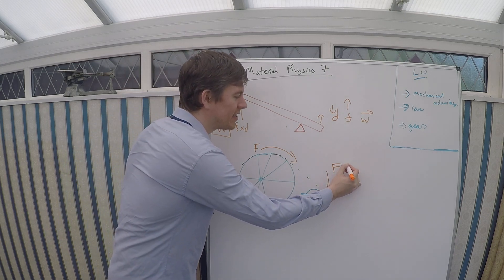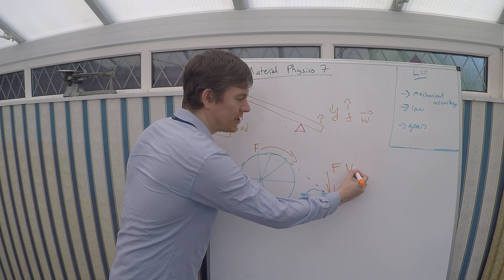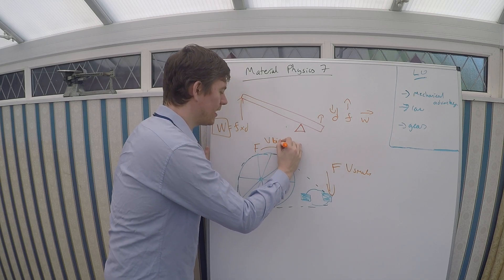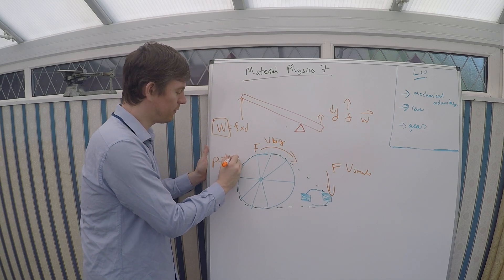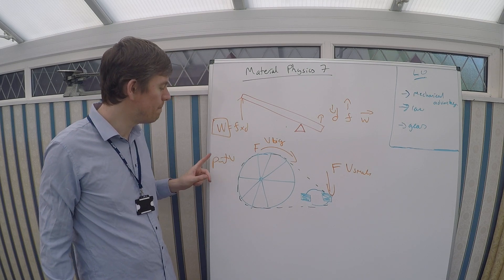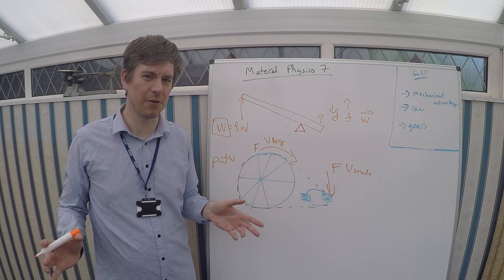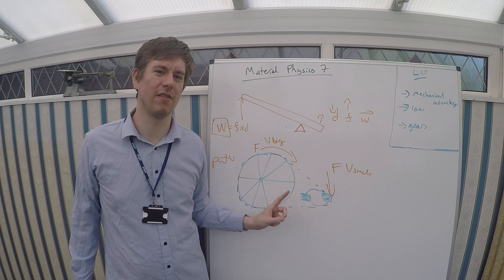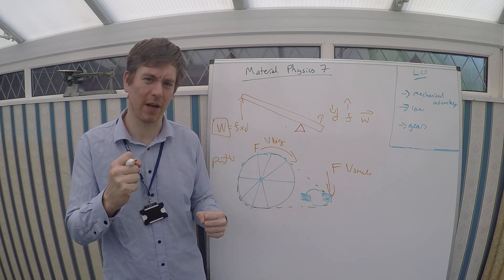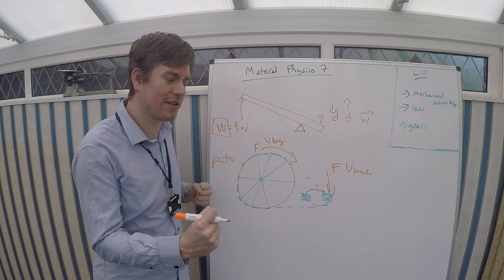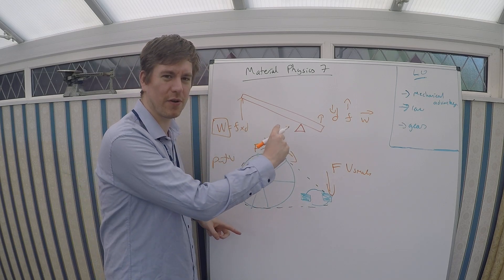But crucially, the speed here is very small, and the speed here is very big. And because power is force times velocity, the power, the energy per second remains constant. But it allows us to do a few really useful things. Firstly, we don't want the bicycle pedals to have to go around really fast. Our legs can't pump that quickly. So it allows us to turn quite a slow movement into a very big movement on the wheel.